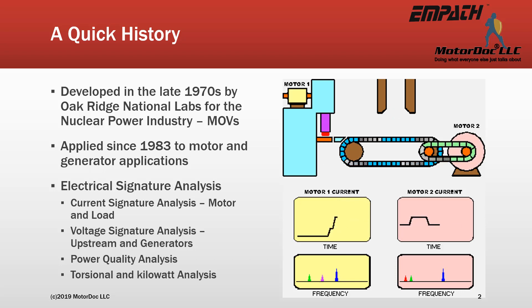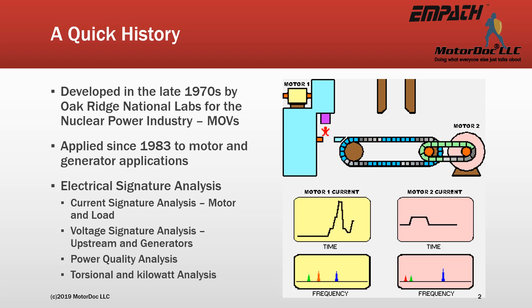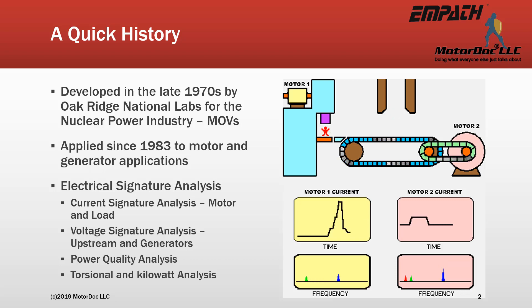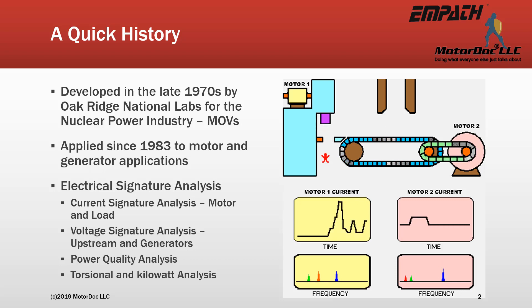M-PATH includes current signature analysis for motors and driven equipment, voltage signature analysis for generators and powertrain, power quality analysis, torsional analysis, and kilowatt analysis. As a whole, the M-PATH system is the only system that performs these comprehensive analyses.